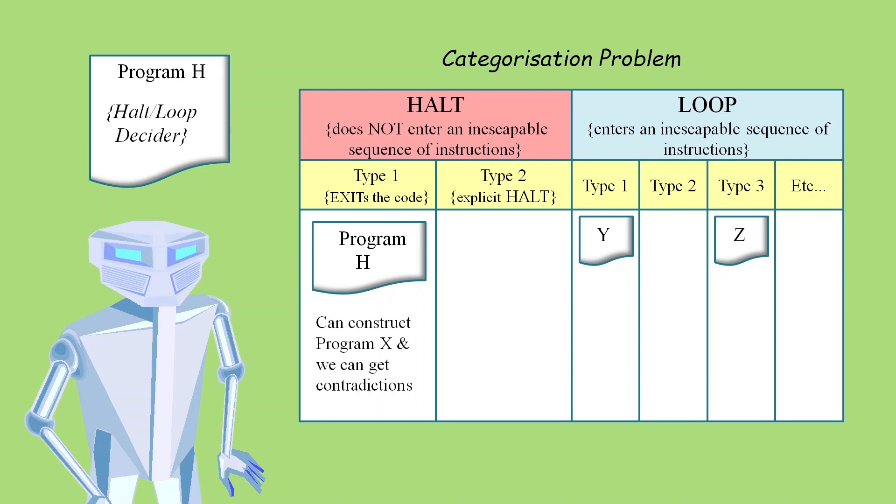Then if Program H goes into the category of halts by simply exiting the code, we can show that we can construct a Program X that can contradict its output. In other words we can prove the Program H can't have an exit type of halt. However, if we say the Program H halts by doing a machine level halt, then we can't construct a Program X and we no longer hit any contradictions. And so under this category it remains a possibility that Program H could exist.